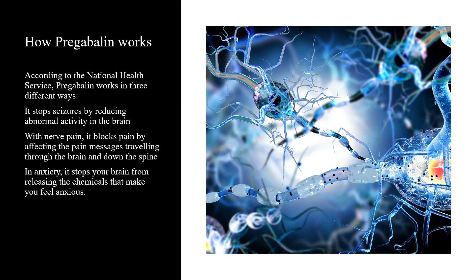According to the National Health Service, pregabalin works in three different ways. It stops seizures by reducing abnormal activity in the brain. With nerve pain, it blocks pain by affecting the pain messages traveling through the brain and down the spine. And in anxiety, it stops your brain from releasing the chemicals that make you feel anxious.